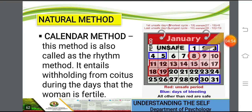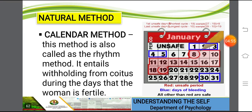Another natural method is the calendar method, also called the rhythm method. It entails withholding from coitus or sexual intercourse during the days that the woman is fertile. Looking at the calendar illustrated, red indicates the unsafe period, blue days are the days of bleeding or menstruation, and all days other than red are safe.